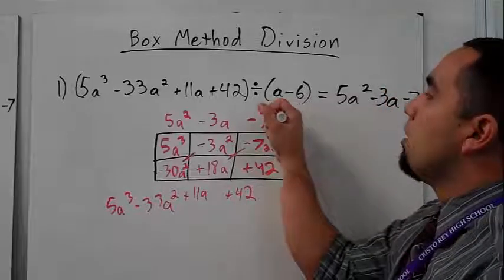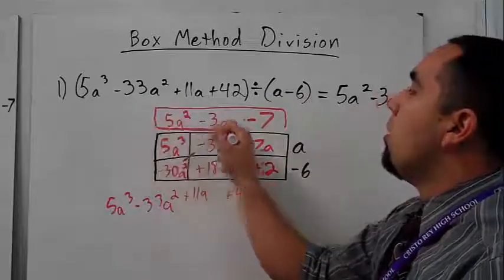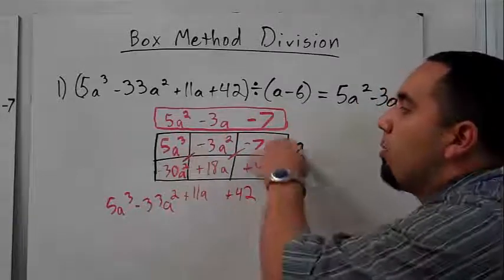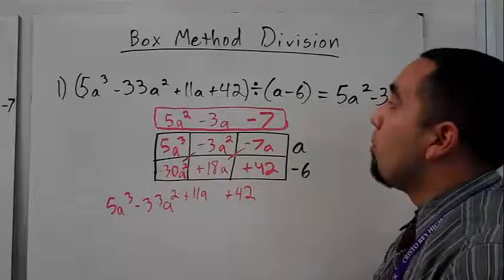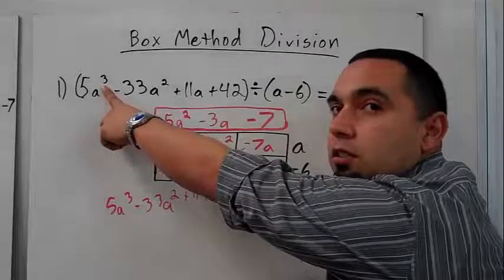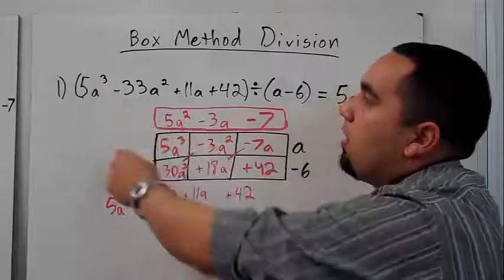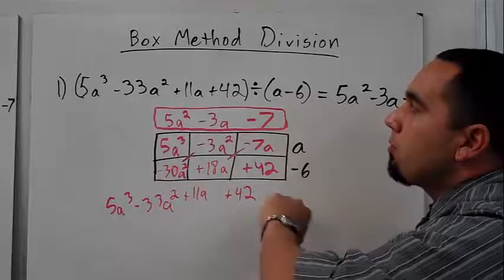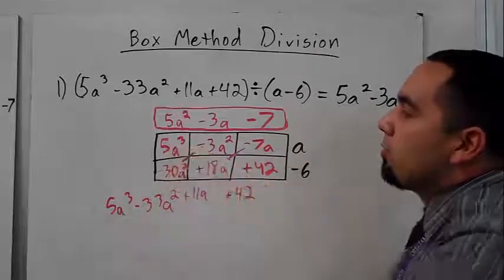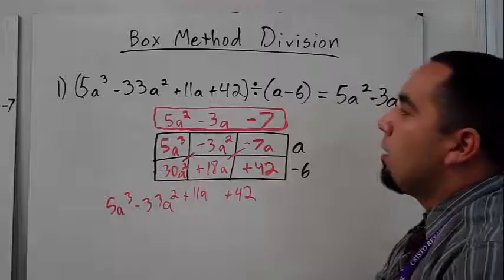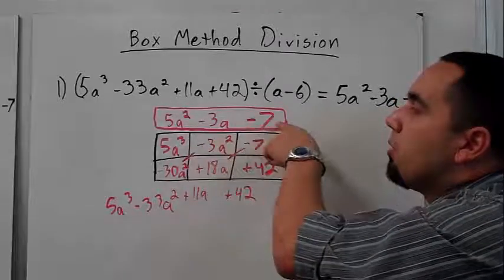So as you can see, the most difficult part of the box method is figuring out how many boxes to make. But again, remember, if you're dividing by one variable, whatever your first term is, you just subtract 1 from your exponent. And it should be 2, which means I'm going to have a 3 by 3. So I'm going to have 3 boxes per.